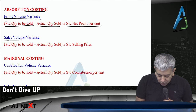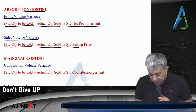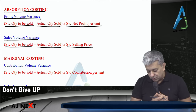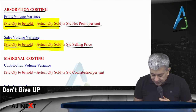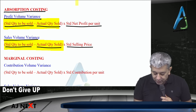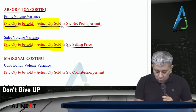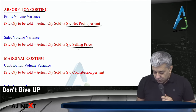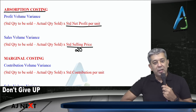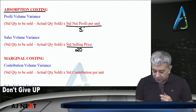Sales volume variance is computed as: how many units should have been sold minus how many units were sold, into standard selling price. Now remember, if two variances share the same bracket, we say they are related to each other. For example, suppose you are given data: standard selling price is 20, and standard net profit per unit is 5.